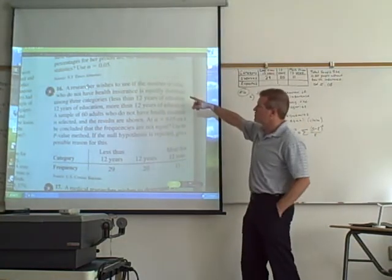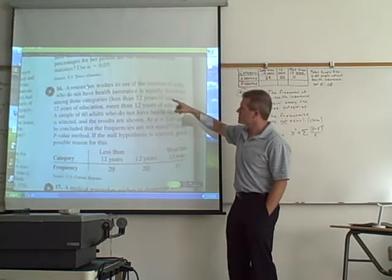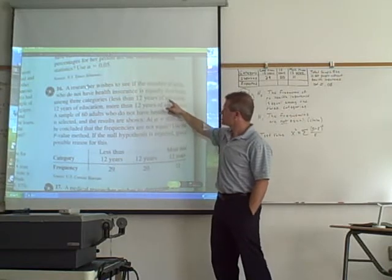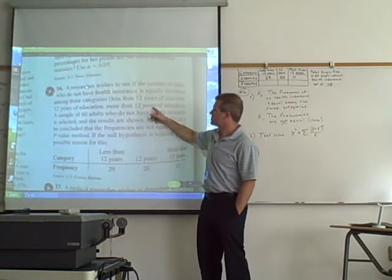Here's the problem. A researcher wishes to see if the number of adults who do not have health insurance is equally distributed among three categories: less than 12 years of education, 12 years of education, and more than 12 years of education.